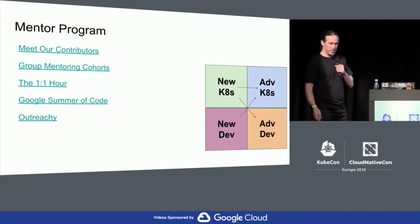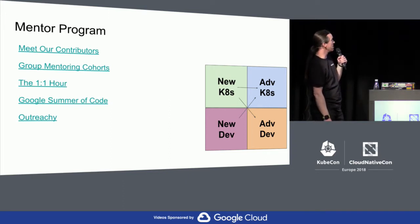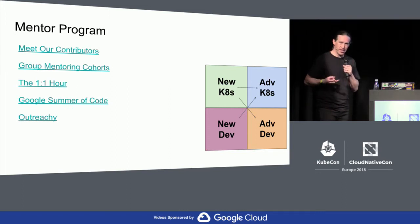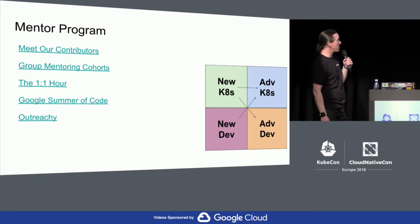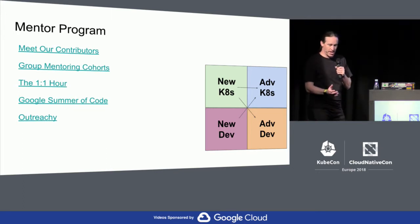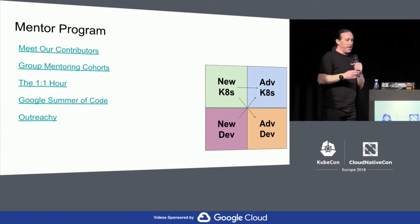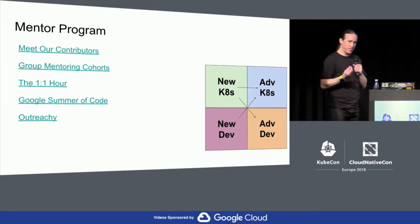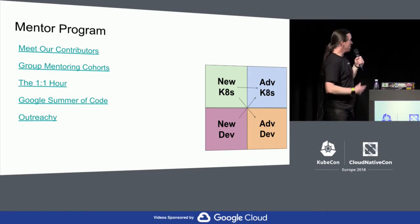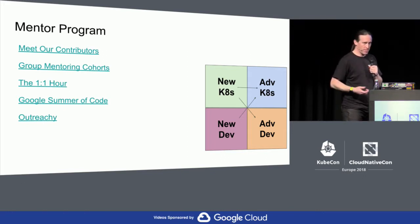Check out Paris Pittman's presentation when the videos are online — she goes into a lot more detail on these formal mentoring programs. Once a month there's a 'Meet Our Contributors' where you can post messages on Slack and Twitter and get live responses via Zoom. There are group mentoring cohorts aimed at bringing new contributors up to membership, or membership up to reviewer. The one-on-one hour lets you get someone's time committed for an hour to go over a specific topic. And Google Summer of Code and Outreachy are more formal programs that could serve as entry points.